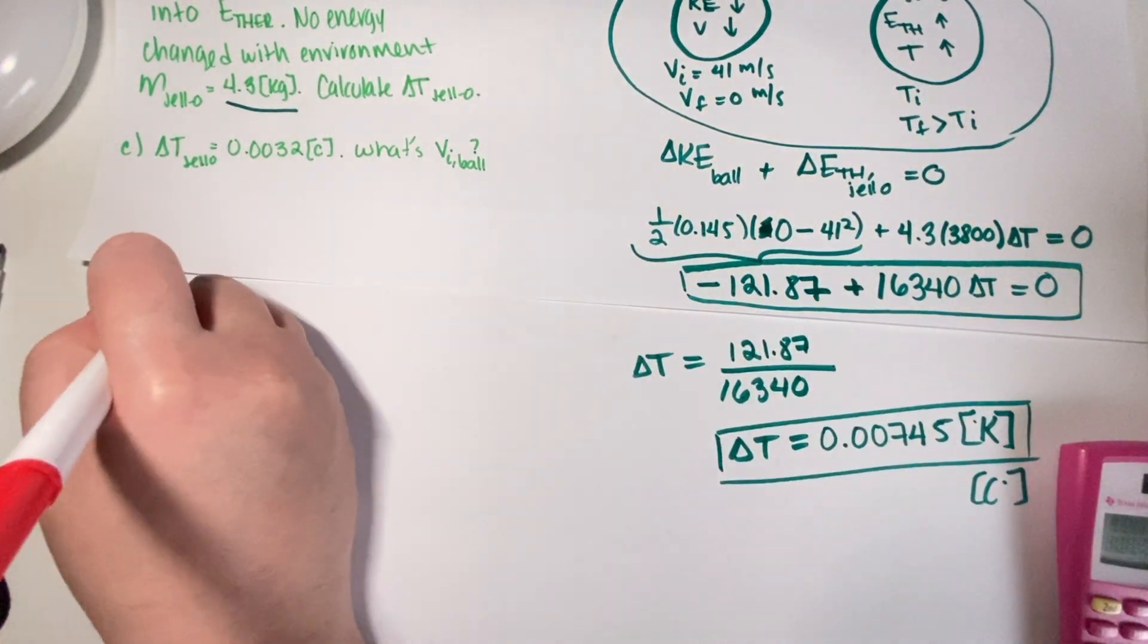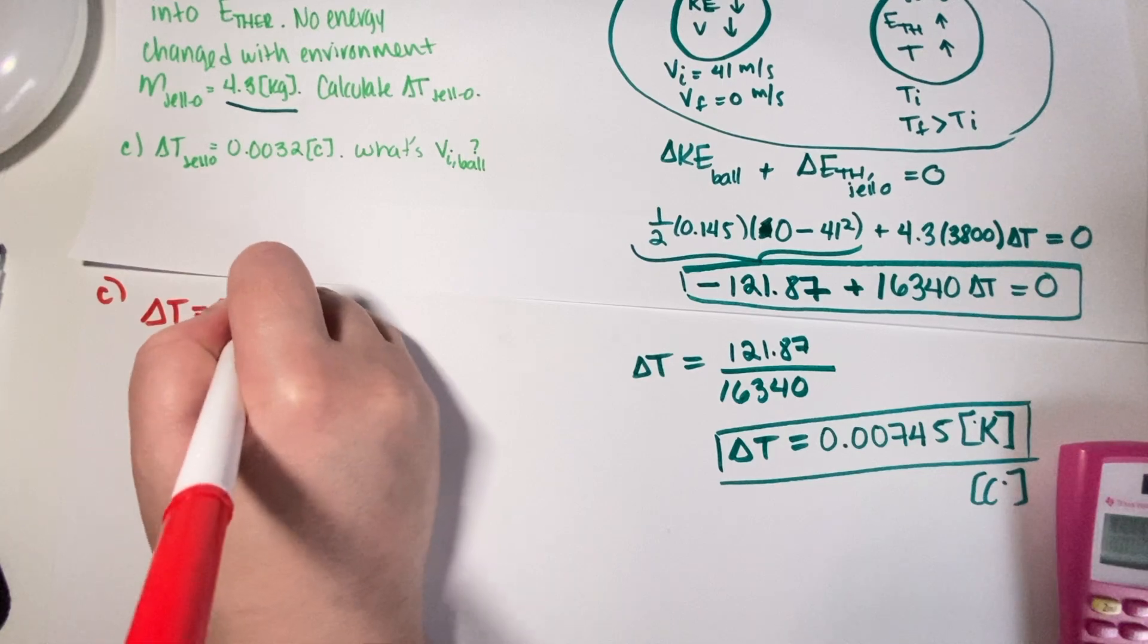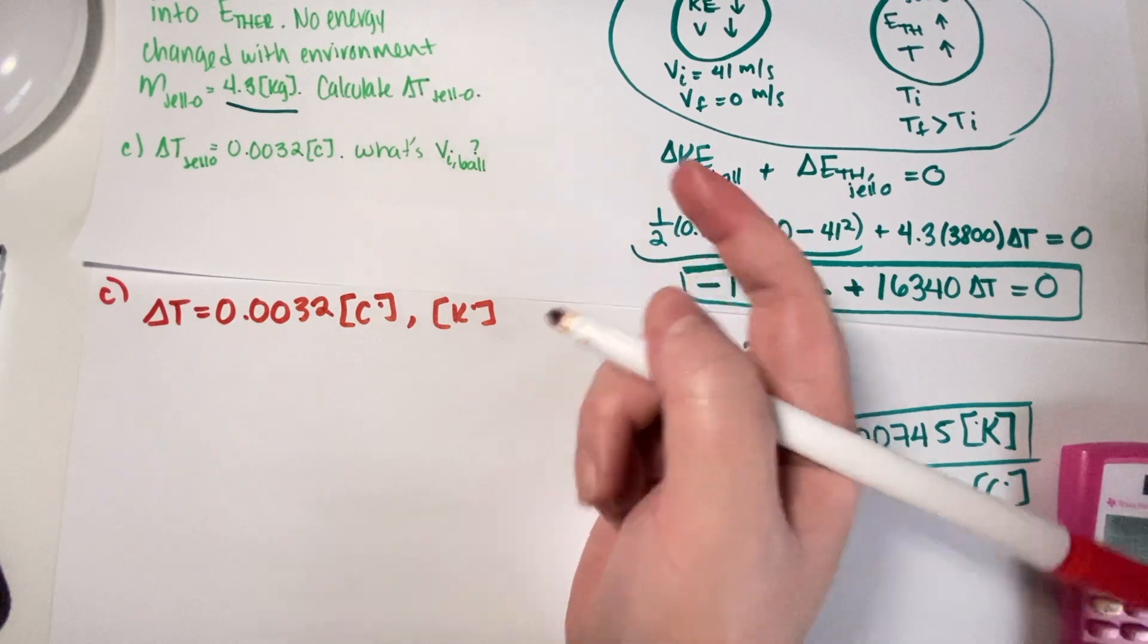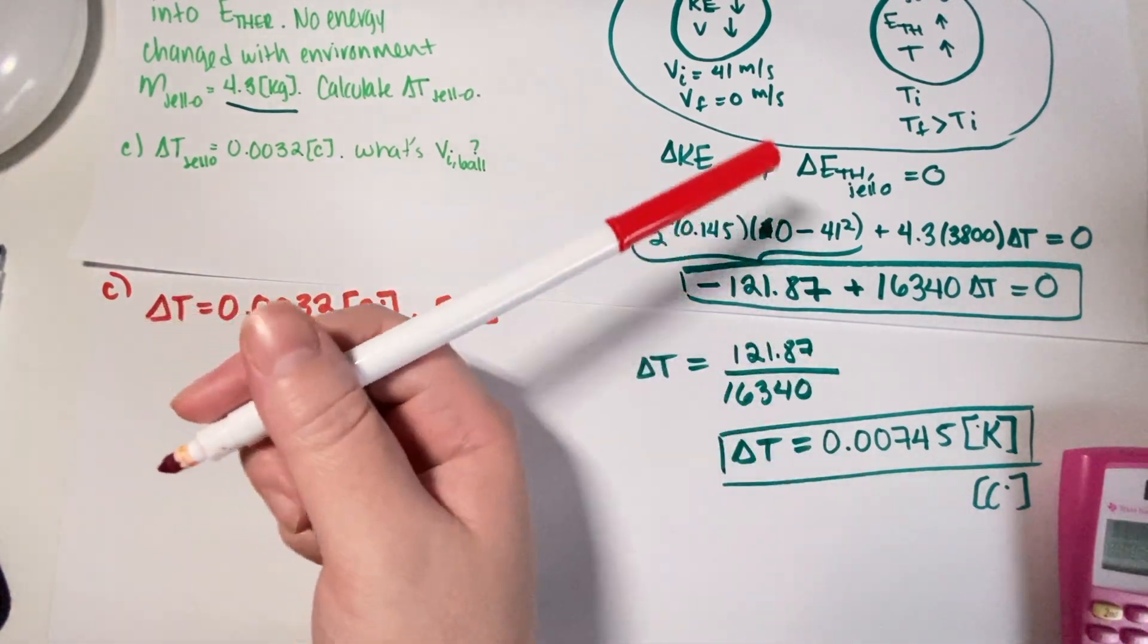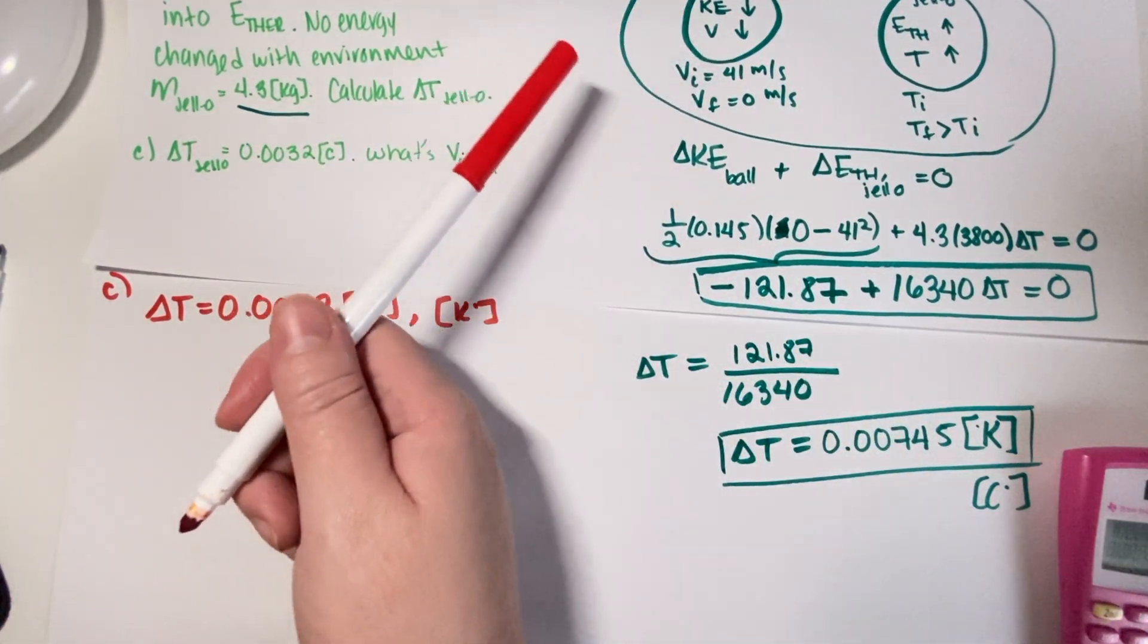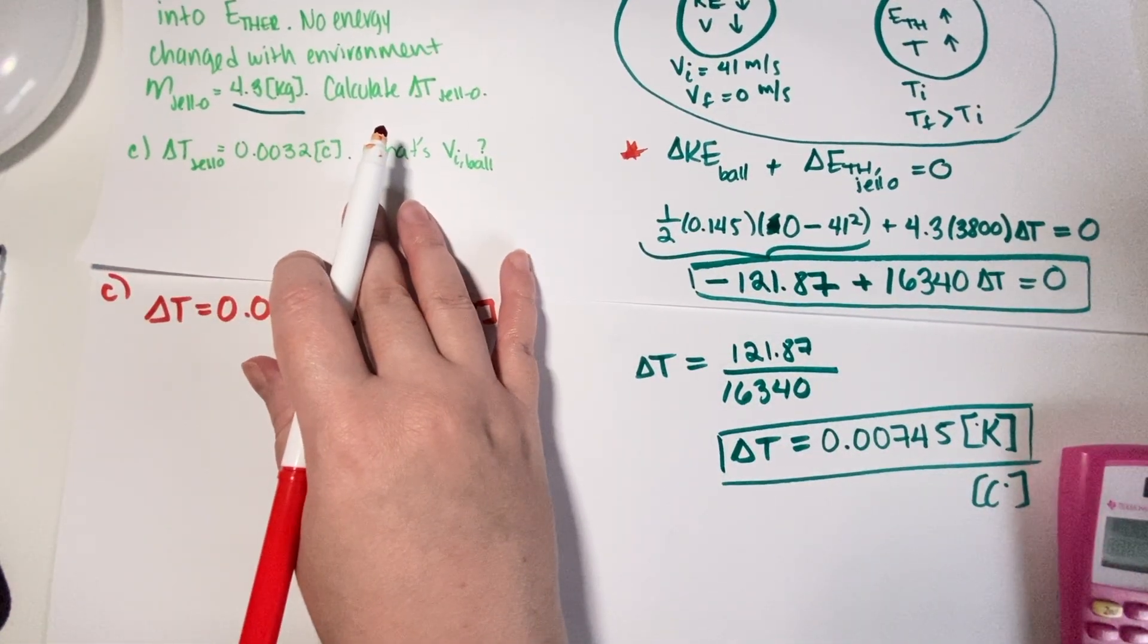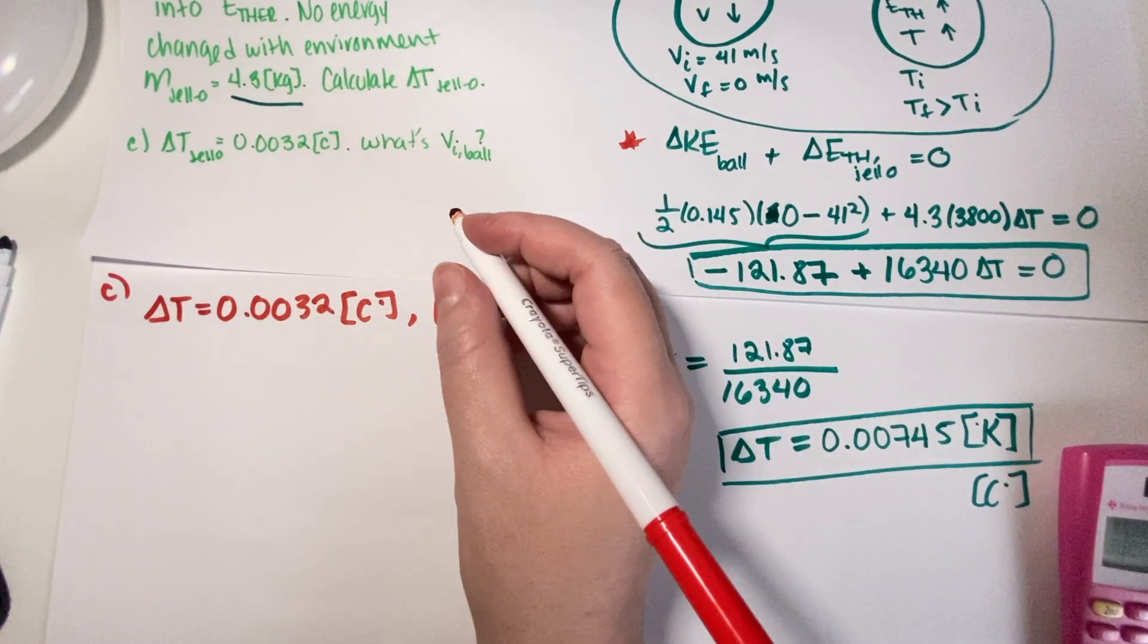So basically now we have delta T. Delta T for Part C is 0.0032. He's saying Celsius, but this is also a change in Kelvin because there's a one-to-one relationship when it comes to deltas. Before they gave you the velocity and you had to figure out delta T. Now they're giving you delta T and you have to figure out the velocity. The reason they're telling you that you can recycle this is because the process is exactly the same. The only thing that's changing is what you know and what you don't know, but the equation and the physical system is the same.